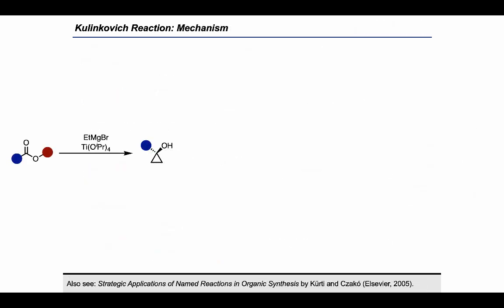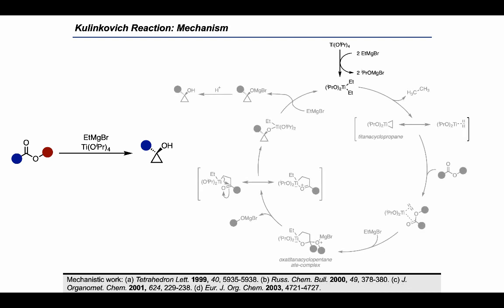Taking the first reaction on the last slide as our model, let's see how the mechanism looks. To start, titanium tetraisopropoxide reacts with two equivalents of ethylmagnesium bromide to generate a dialkyl-dialkoxy-titanium species, which can undergo a beta-hydride elimination to extrude ethane. The catalytic intermediates generated through that process are understood to be a titanacyclopropane and a titanium-ethylene complex.